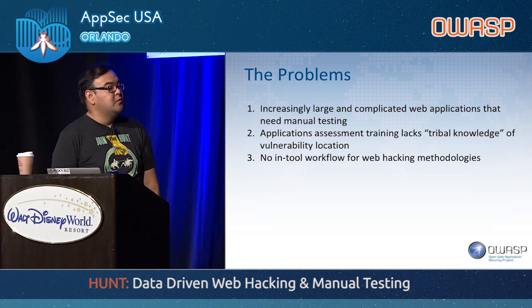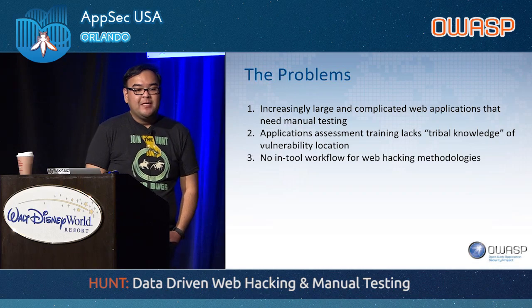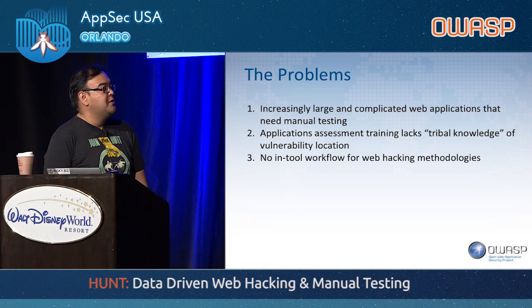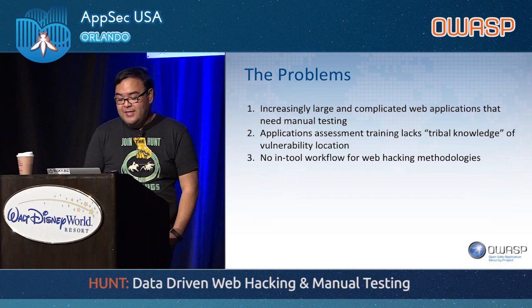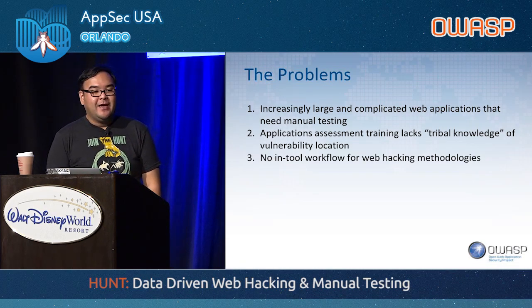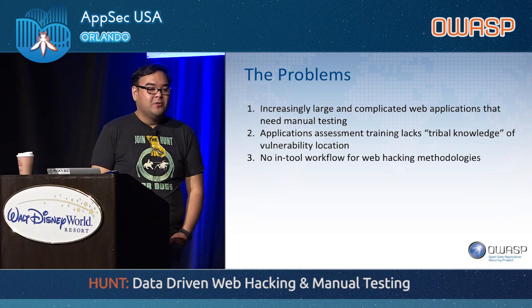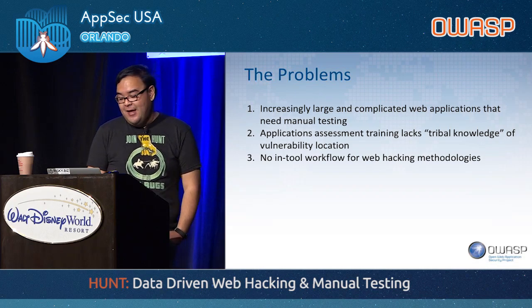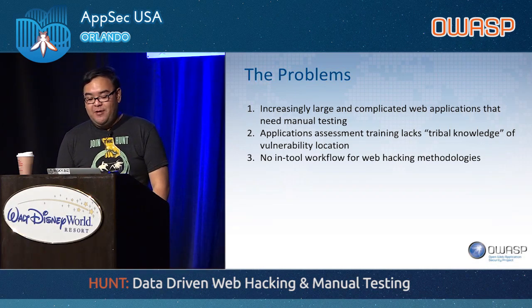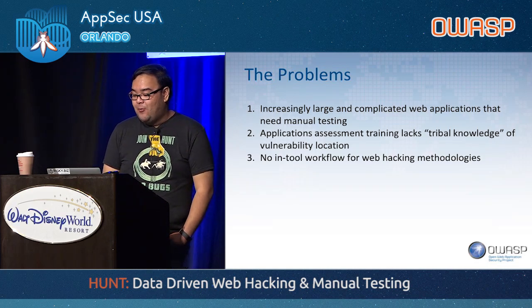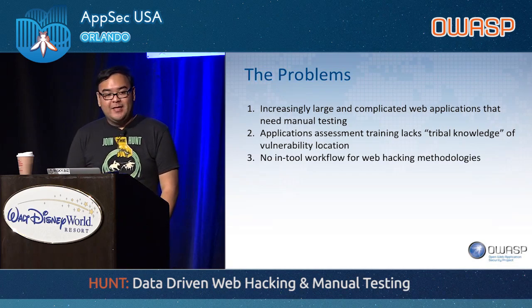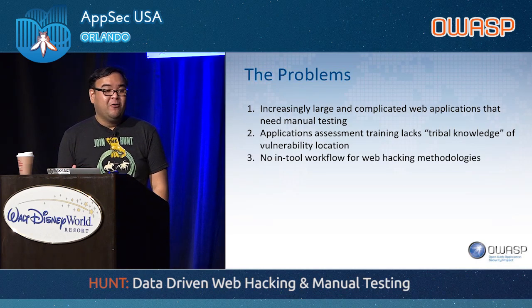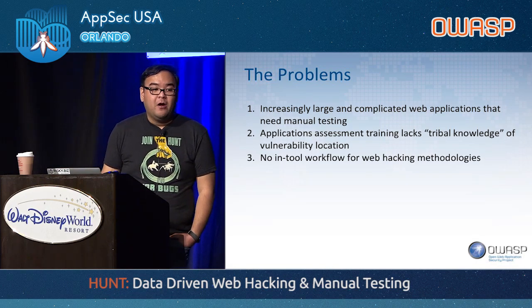Let's talk about the current problems we're facing in the web application space when it comes to manual testing. The first thing you'll notice is that there are increasingly large and complicated web applications that need manual testing. If you go on websites like Amazon or any of those big e-commerce websites, they're huge — they have a lot of dynamic content, whether it's JavaScript, HTML5, stuff like that. There's going to be hundreds and hundreds of dynamic parameters, and as a manual tester, how do you tackle that? It's going to be hard to do manual testing with the sheer amount of injectable entry points on these applications.